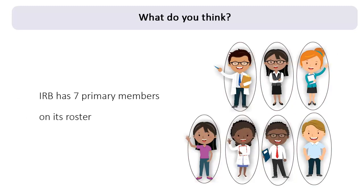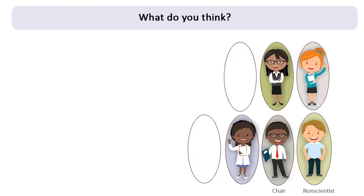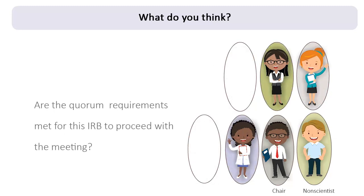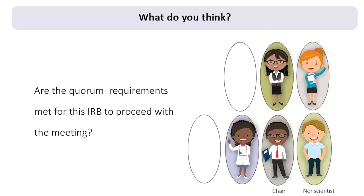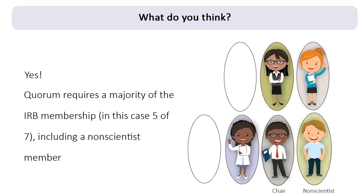Consider an IRB with a total of seven primary members on its roster. It convenes to review several research protocols, none of which involve prisoners. The chair is in attendance, along with the non-scientist member, and three additional primary members. Are the quorum requirements met for this IRB to proceed with the meeting? Yes, the quorum requirements are met because a majority of the IRB membership is present—five of the seven members—including a non-scientist member.